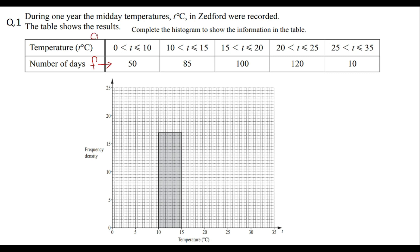I'll write the class widths for each interval. 10 minus 0 gives 10. 15 minus 10 gives 5. 20 minus 15 gives 5. 25 minus 20 gives 5. And 35 minus 25 gives 10. So the class widths are ready.